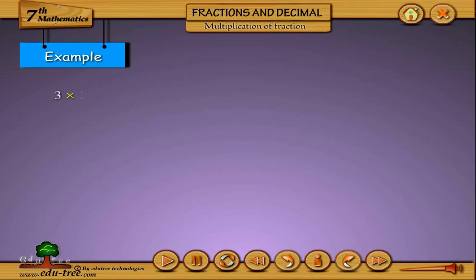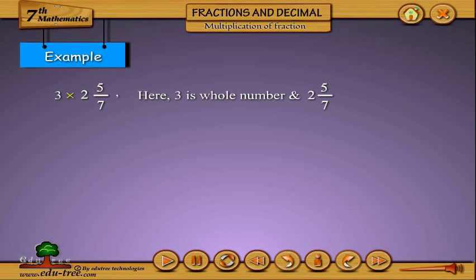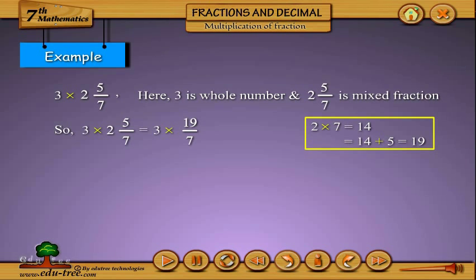Example: 3 into 2⁵⁄₇. Here, 3 is a whole number and 2⁵⁄₇ is a mixed fraction. So, 3 into 2⁵⁄₇ equals 3 into 19/7, since (2 into 7 equals 14, plus 5 equals 19). This equals (3 into 19) divided by 7, which equals 57/7.